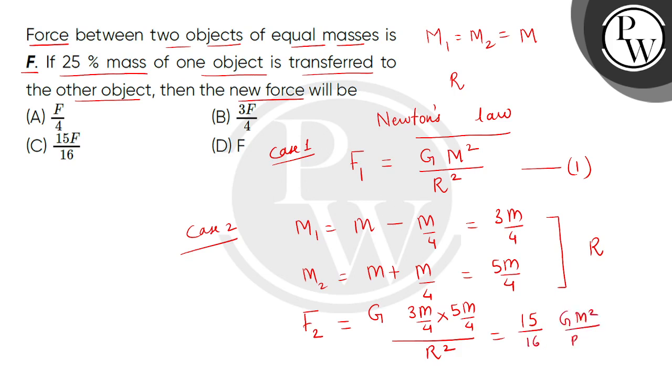And we will use equation number one. So here we have to find F2. So this is F2 equals 15 divided by 16 F. So this is F.